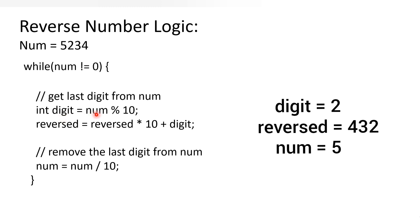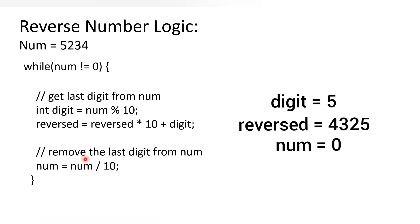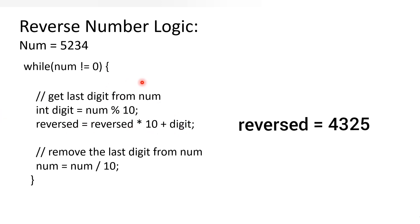5 is not equal to 0, so we enter the loop. 5 modulus 10 gives remainder 5. Reversed is 432, so 432 into 10 is 4320, plus 5 gives 4325. Now the reversed number is 4325. We update the number: 5 divided by 10 gives quotient 0. Since 0 is not equal to 0 is false, we exit the loop and get the reverse value 4325.